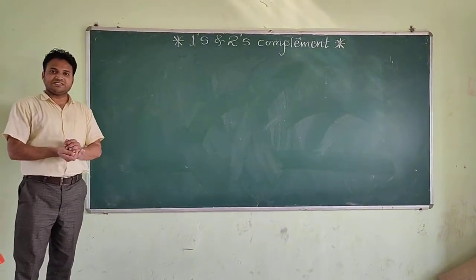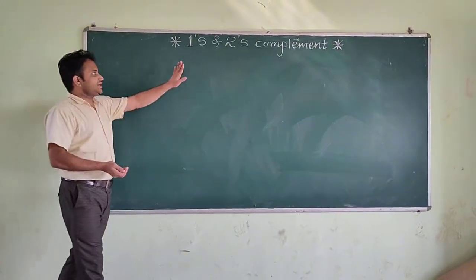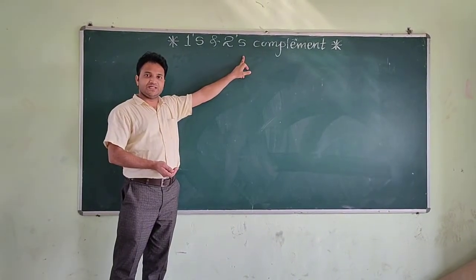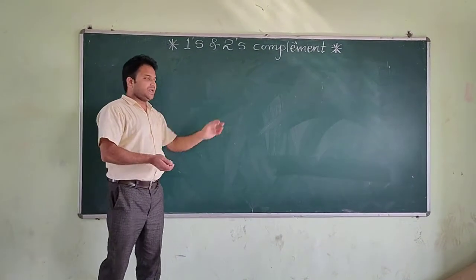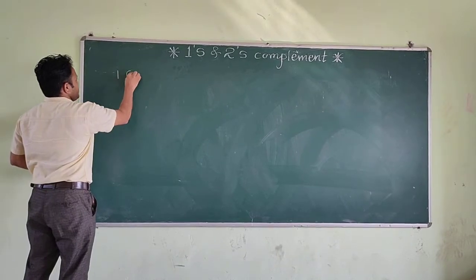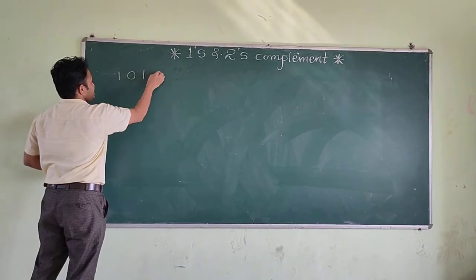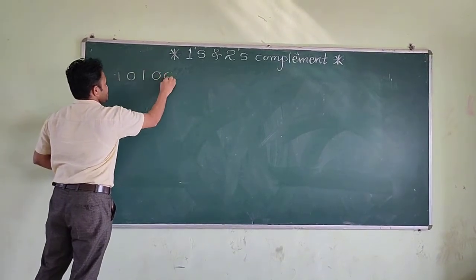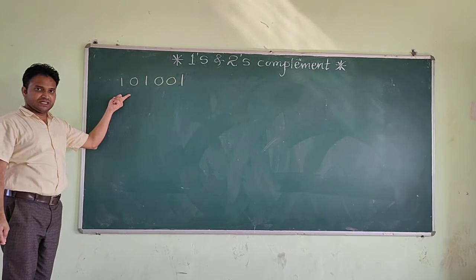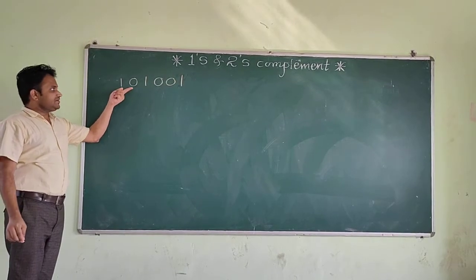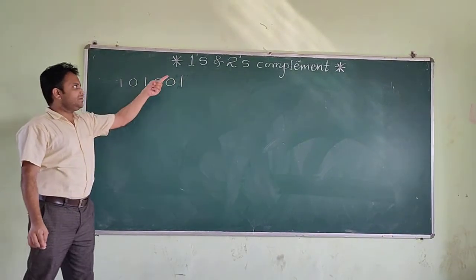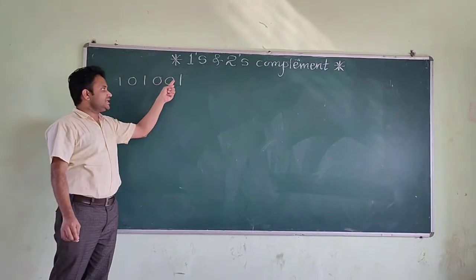Hello, today we will see how to find the 1s and 2s complement of a given binary number. Suppose this number is given to you: 101001. This is the number which is in binary, and it is asked to find the 1s complement of this number.